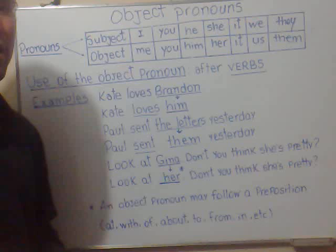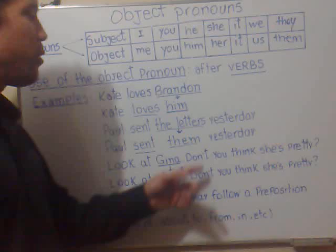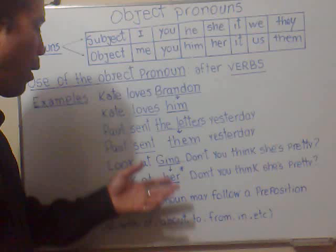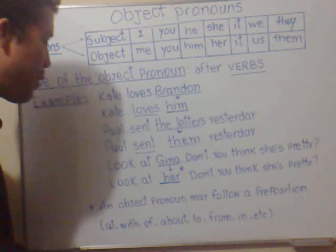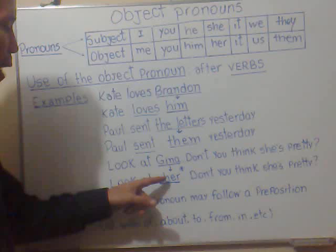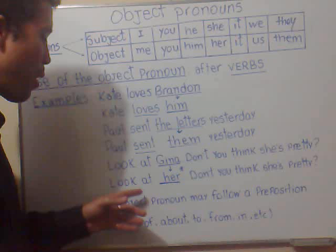Now sentence number three is a bit different from the others. Look at Gina — don't you think she's pretty? Look at her — don't you think she's pretty? The correct object pronoun in this sentence is her, since Gina is the name of a girl or woman. But the sentence is different because I'm using a preposition, and the object pronoun does not follow the verb right away, but is following the preposition at.